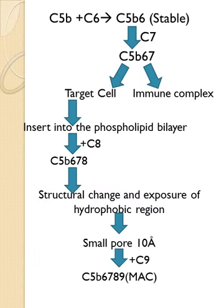Coming to the MAC complex again: C5b attaches to C6, forming C5b6; then C7 attaches. The target cell helps insert this into the phospholipid bilayer. C8 attaches, forming C5b,6,7,8. There are structural changes and exposure of a hydrophobic region, creating a small pore of 10 angstroms. Then C9 attaches — C9 is a polymer complex that completes the MAC complex. So the MAC complex is C5b,6,7,8,9. This is often asked in MCQs: the components of the MAC complex are C5b, 6, 7, 8, and 9.